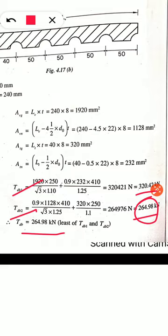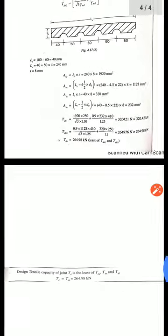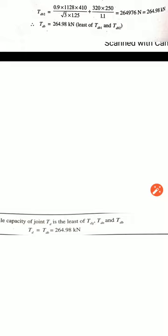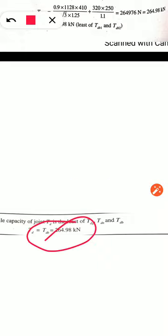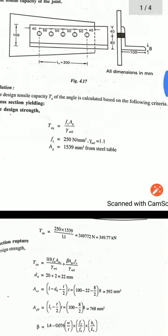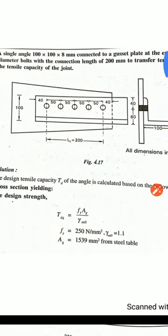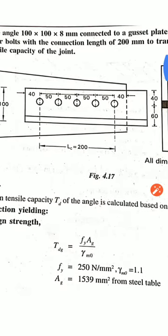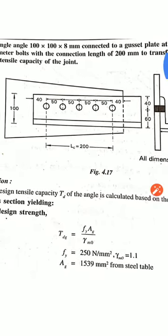The tensile capacity of the angle section is the least of the three values: gross yielding = 349.77 kN, rupture = 342.32 kN, and block shear = 264.98 kN. Therefore, the tensile carrying capacity = 264.98 kN. This completes the problem on design of tension members for angle section. Remember, the design strength due to rupture for angle section is different when compared to plate section.